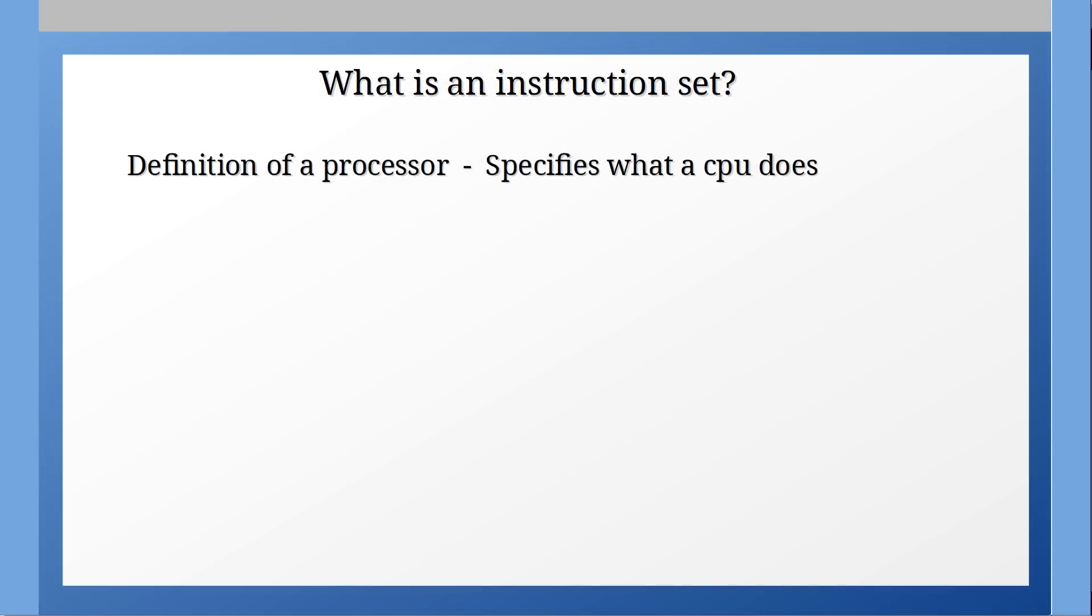Instruction sets are the logical definition for what a processor is with absolutely no regard for the hardware that is used to implement it. It's literally just a specification describing what a CPU does and not how the CPU works. The hardware guys are free to implement the CPU however they want as long as it takes in a specific input and a specified action is performed on that CPU then the CPU can meet the instruction set specification.